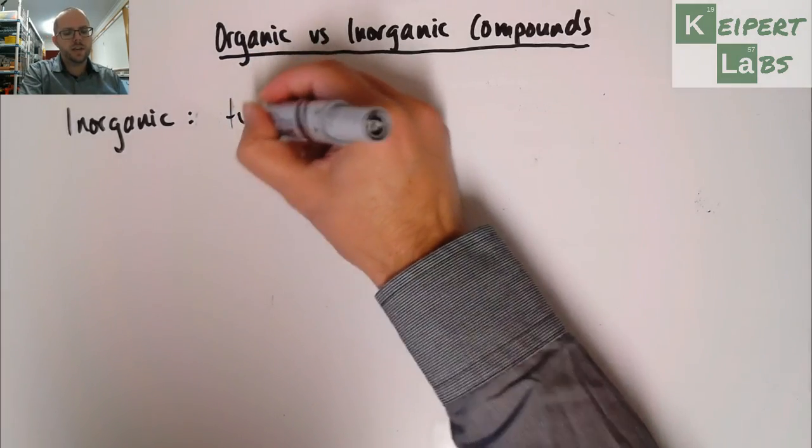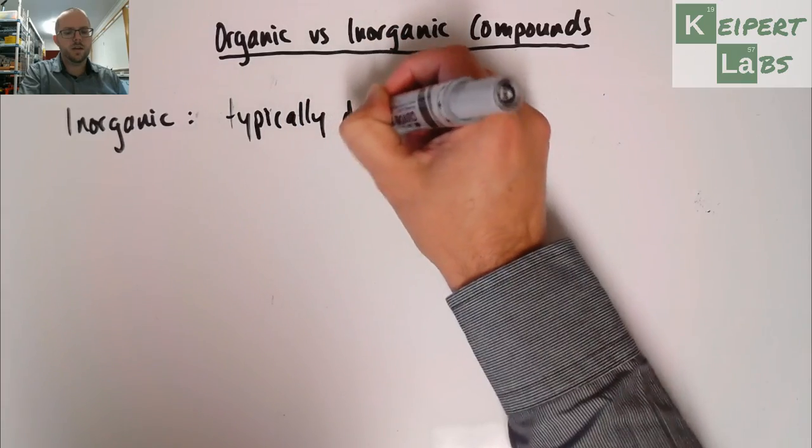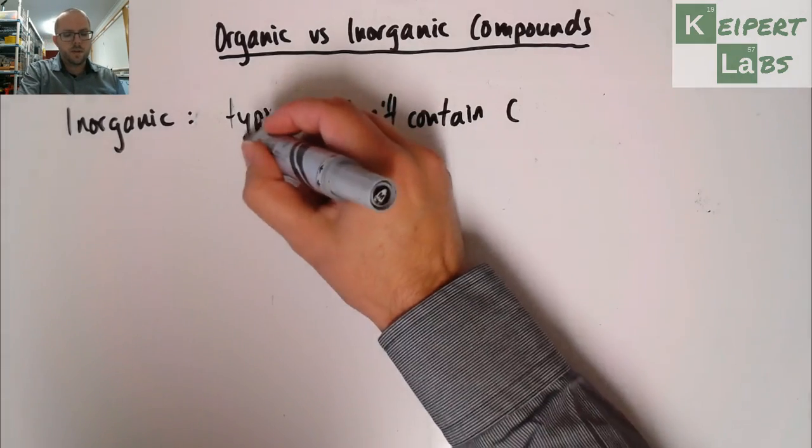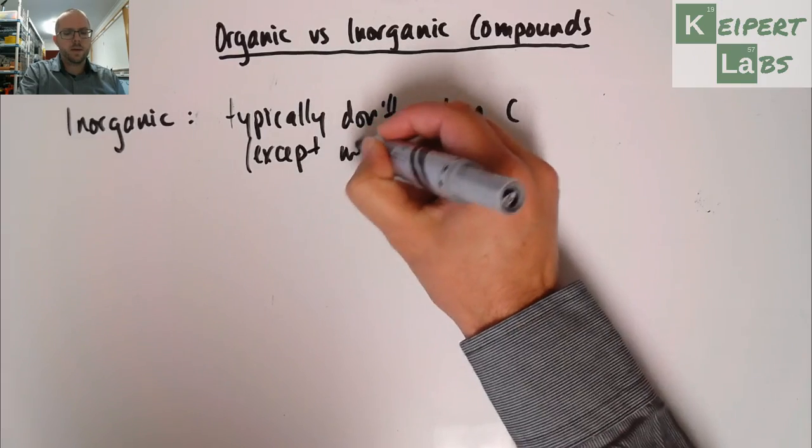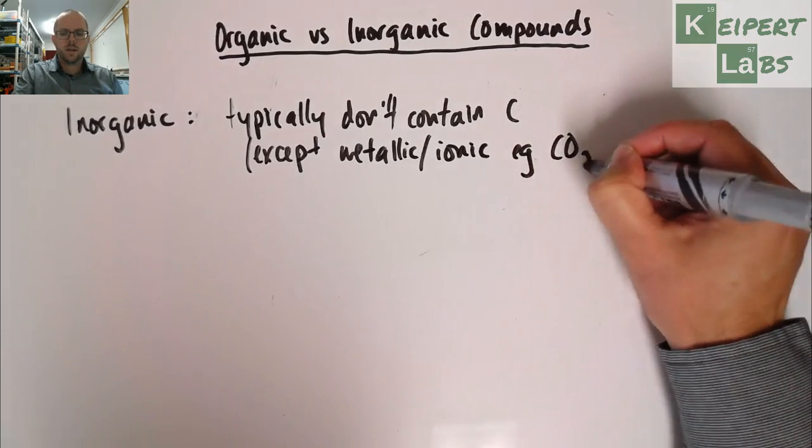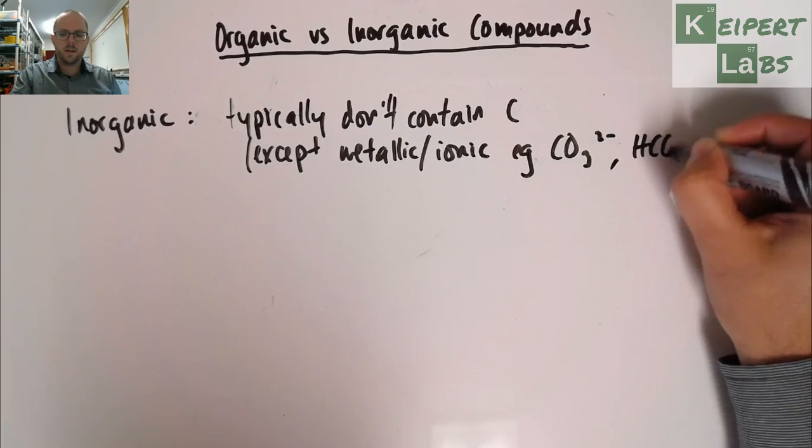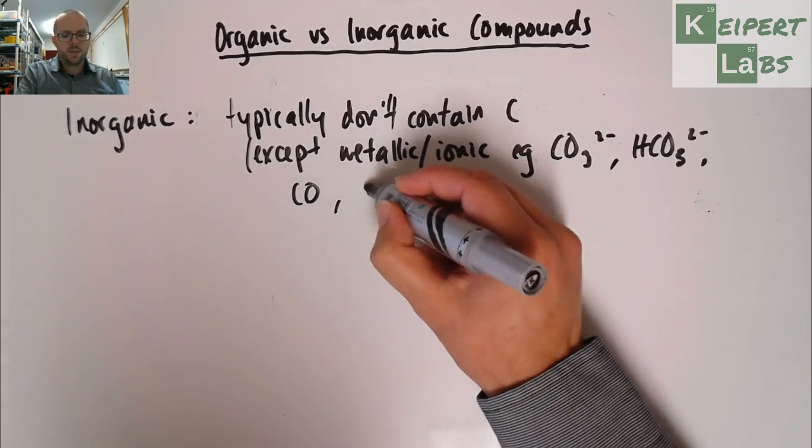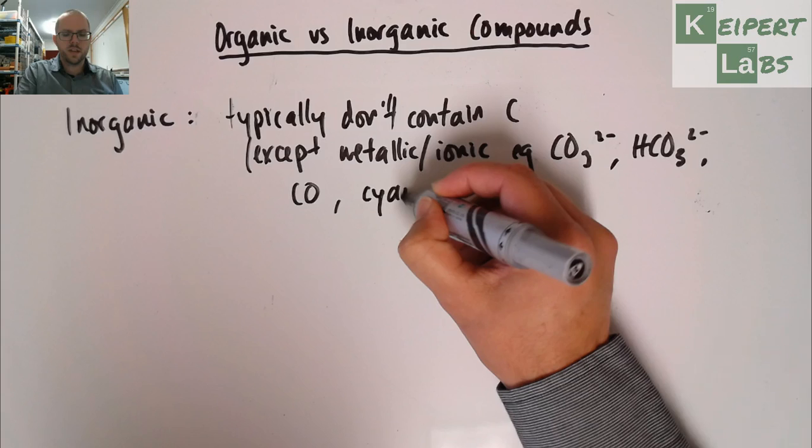Now you might just decide, okay, well, basically everything that's not organic, but that's not really very specific. What we would say is typically don't contain carbon. Now there are some exceptions here. What we would say is except things that are perhaps metallic or ionic, e.g. carbonate or hydrogen carbonate. We've also got carbon monoxide or cyanides, which is the CN minus ion. So they're kind of the exceptions. So they are things that contain carbon, but we consider in the inorganic group.